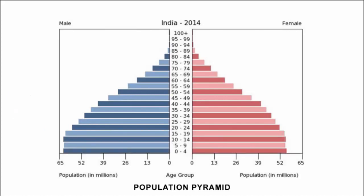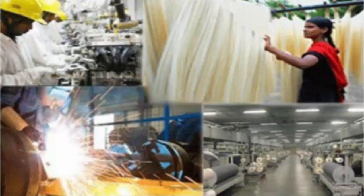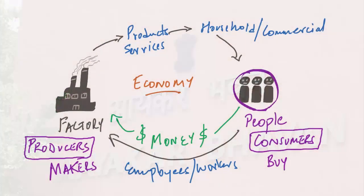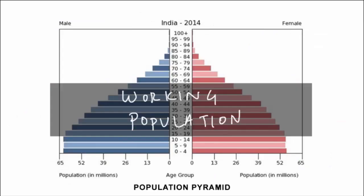Now look at the age group of 15 to 59 years. This entire group is known as the working population — the number of people who are willing and eligible to work. These are the people who are working, generating income, paying taxes, and running the nation's economy. All the budget for government policies and schemes has to be generated from this group, because they pay taxes and from that tax money the budget is allocated.